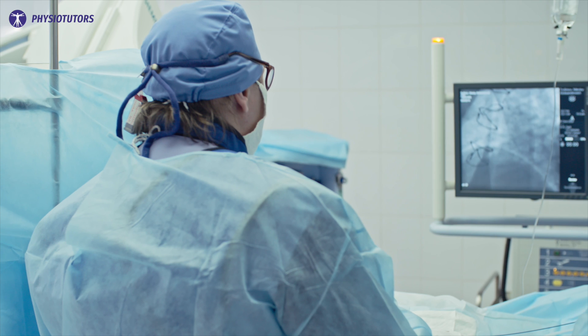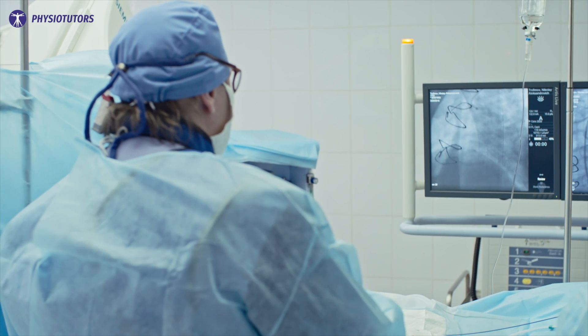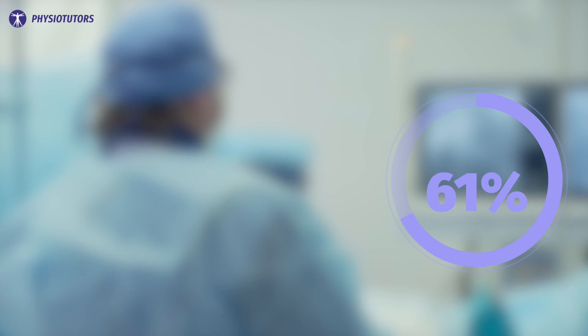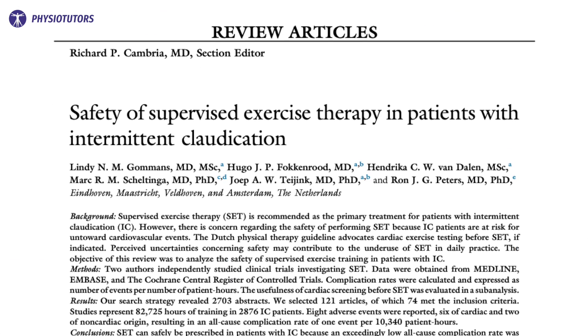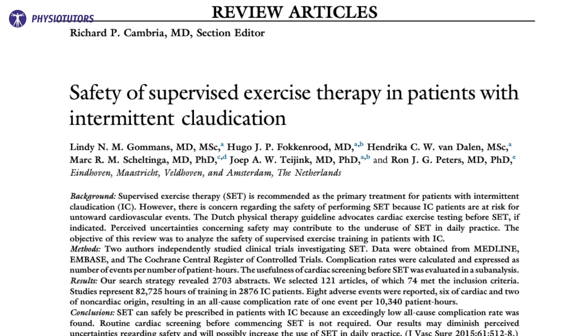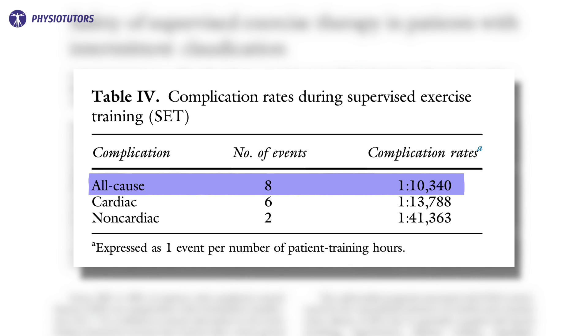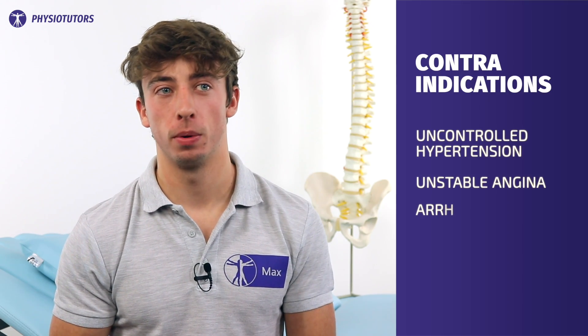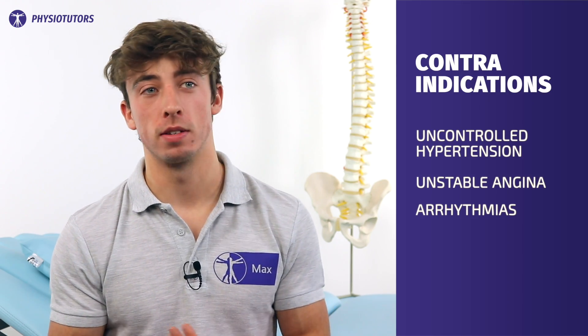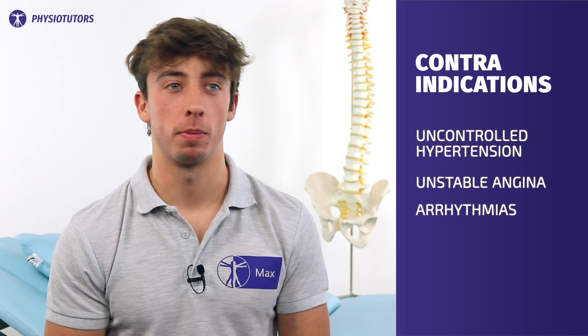Many clinicians feel that exercising is dangerous with this condition — about 70% of vascular surgeons believe so in aorta or iliac stenosis patients. However, a review by Gomez et al. noted an all-cause complication rate of one event for every 10,340 hours of exercising, so we can safely assume that these worries are unsubstantiated. There are contraindications, though, like uncontrolled hypertension, unstable angina, or arrhythmias.